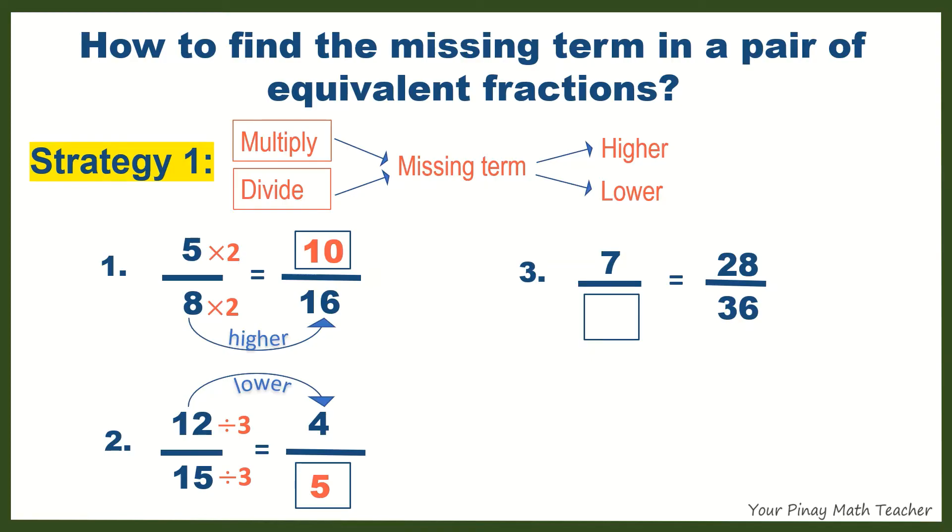Number 3: In this case, the fraction with complete terms is on the right, 28 over 36. 28 gets lower to 7. It also means that you have to divide 28 by 4 to get 7. Do the same with 36, so the missing term is equal to 9.